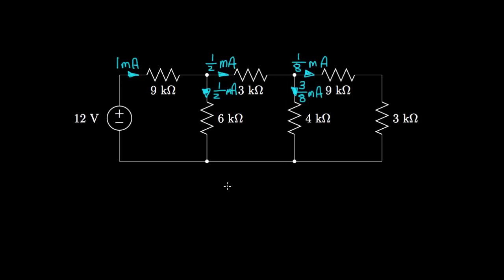At this point, we've determined all of the currents in this circuit. We have 1 milliamp through the 9-kilohm resistor, giving 9 volts across it. We have a half milliamp through the 3-kilohm and 6-kilohm resistors. We have one eighth of a milliamp through the 9-kilohm and 3-kilohm resistors, and 3 eighths of a milliamp through the 4-kilohm resistor, which allows us to compute any voltage in the circuit.